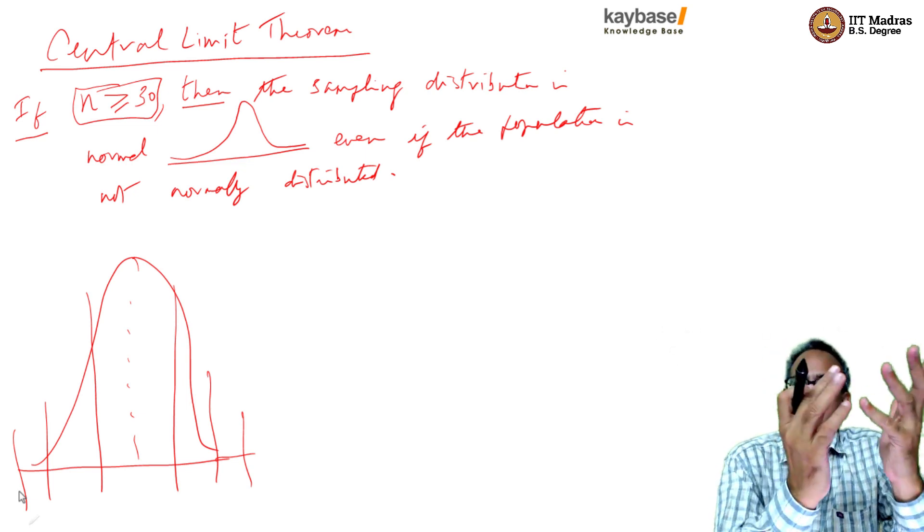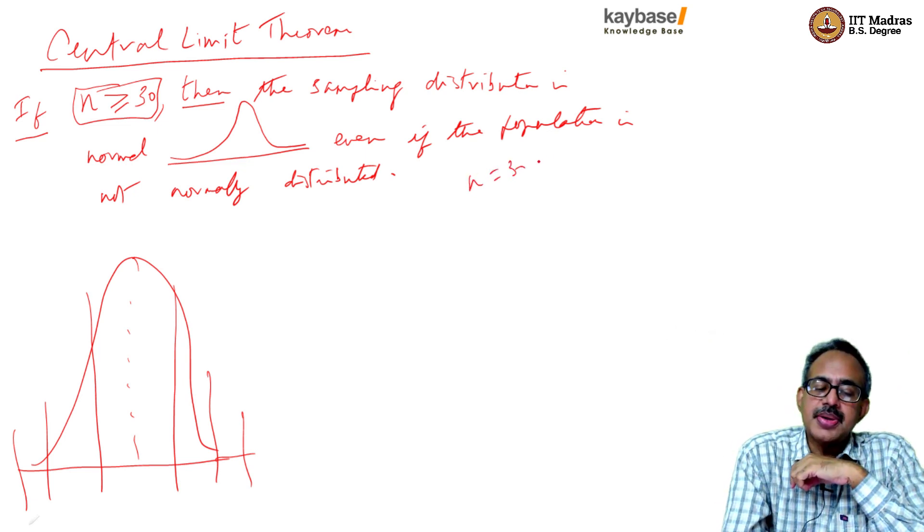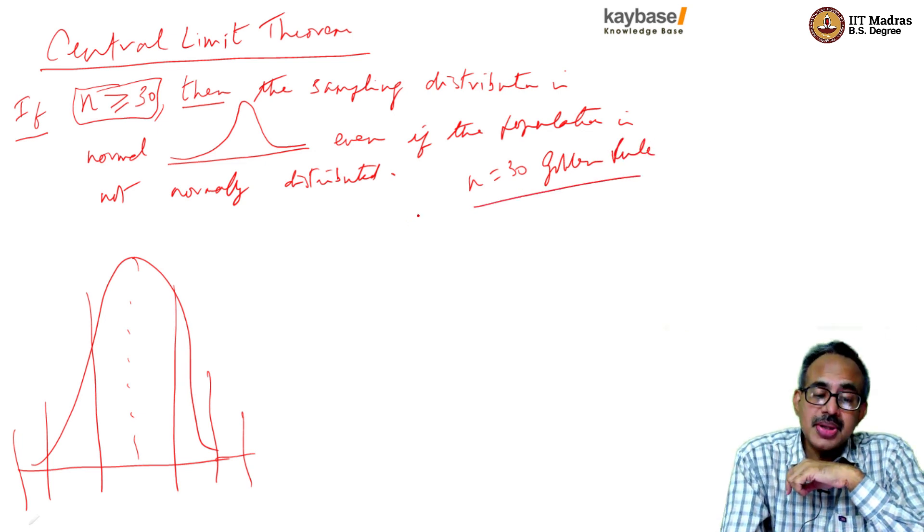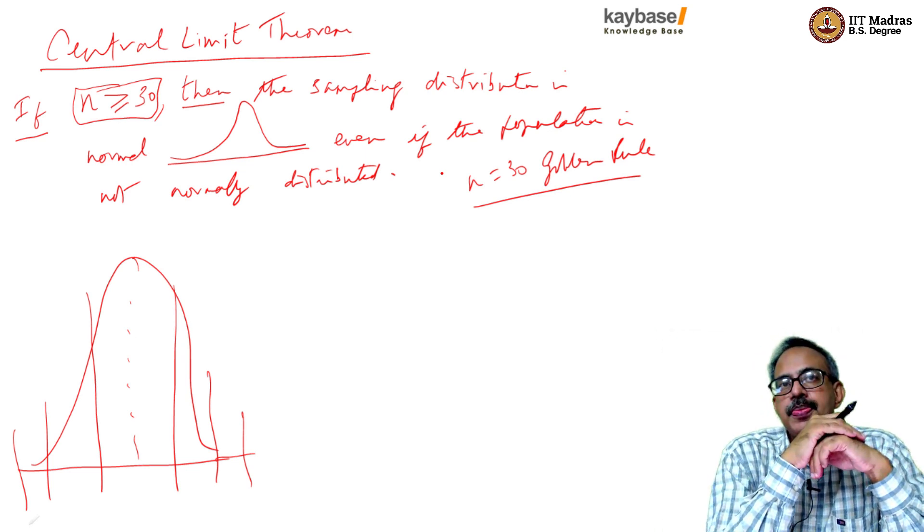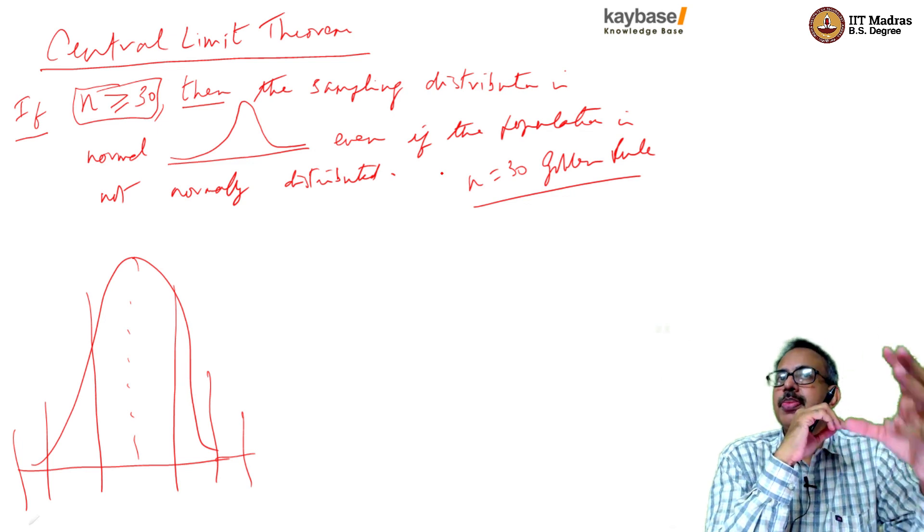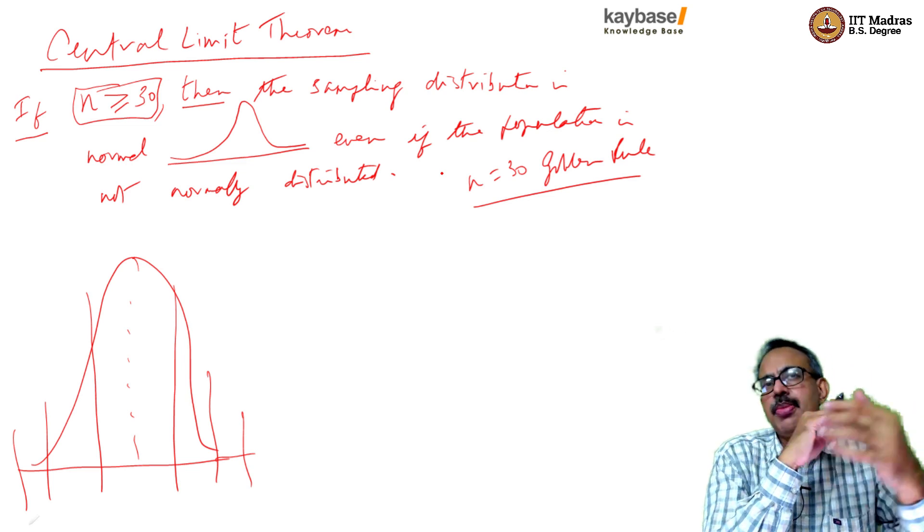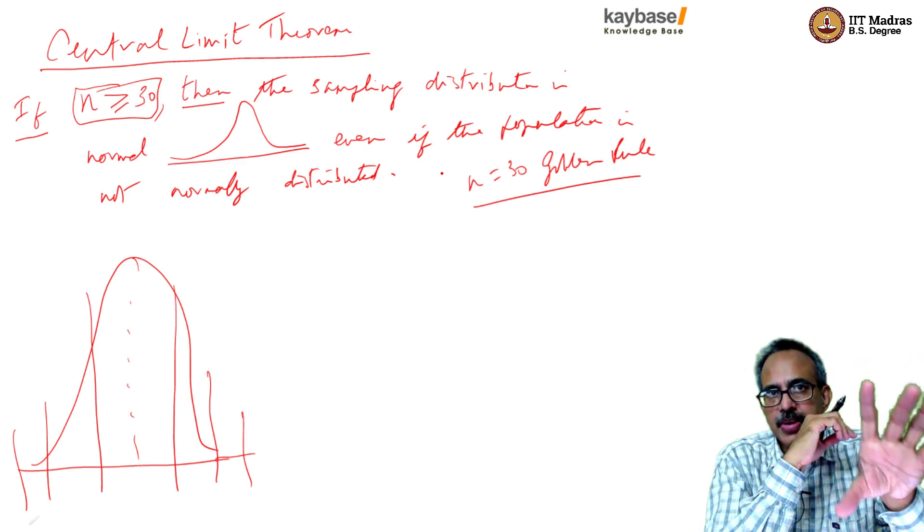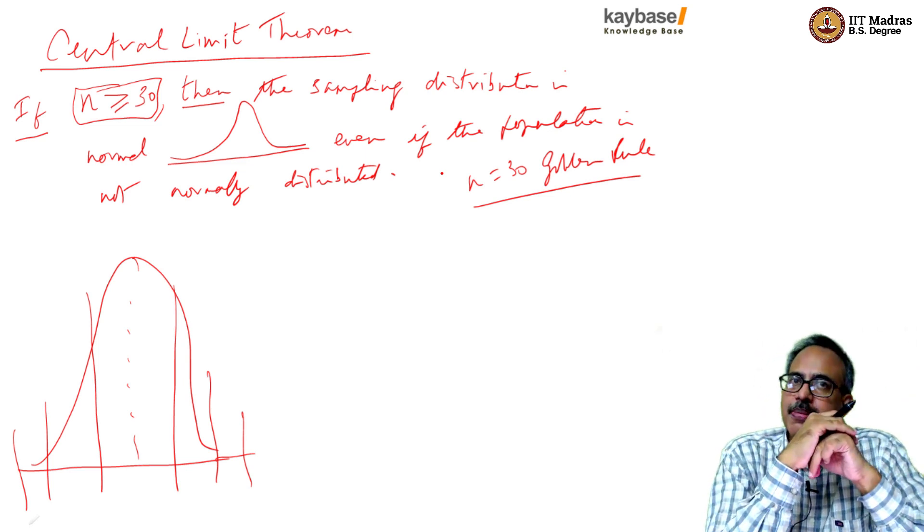All those things we can take for granted if we ensure that our sample size is 30 at least. Now you'll remember that we talked about sample size determination. We said N equal to 30 is the golden rule. This is why it is the golden rule. Because when N is equal to 30, the Central Limit Theorem says that even if the population from which the sample is drawn is not normally distributed, then the sampling distribution of the mean will be normally distributed and therefore all the principles of 67%, 95%, 99% will apply.